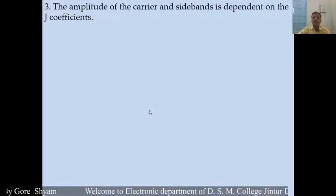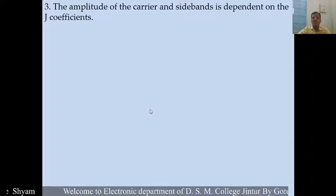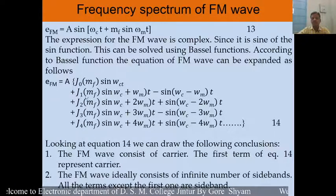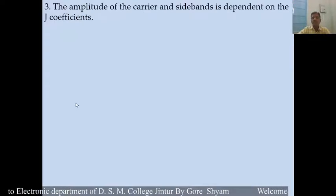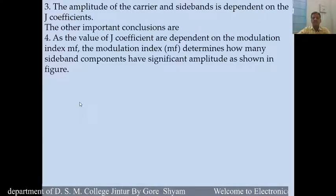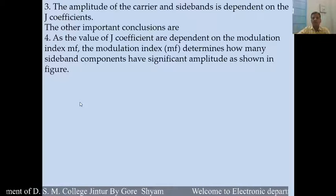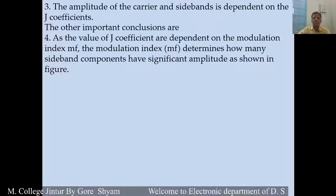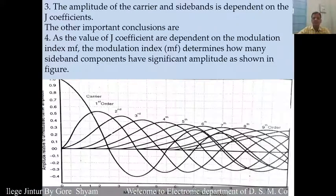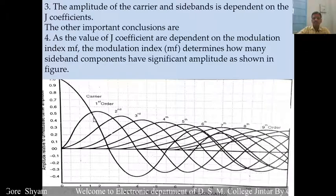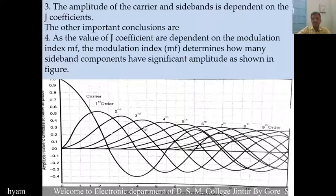The amplitude of the carrier and side bands depends upon the J coefficient. Amplitude and frequencies depend upon this coefficient, that is J. The J coefficient values depend on the modulation index Mf. The modulation index determines how many side band components have significant amplitude, as shown in this figure.